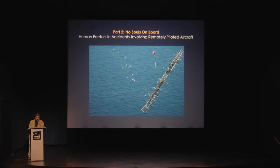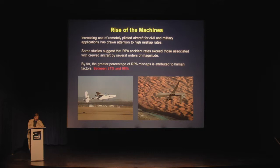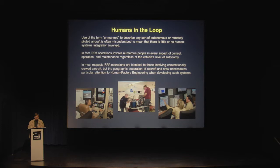In the second part of my presentation, I would like to discuss remotely piloted and autonomous aircraft. Due to the expanding numbers of these types of aircraft, there has been a commensurate rise in the number of accidents. Remotely piloted aircraft are being increasingly used for both civil and military applications. Some studies suggest that RPA accident rates exceed those associated with crewed aircraft by several orders of magnitude. By far, the greater percentage of RPA mishaps is attributed to human factors. We frequently hear terms like drone and unmanned aircraft. Use of the term unmanned is often misunderstood to mean that there is little or no human systems integration involved. In fact, RPA operations involve numerous people in every aspect of control, operation, and maintenance, regardless of the vehicle's level of autonomy.